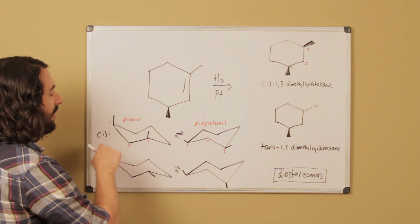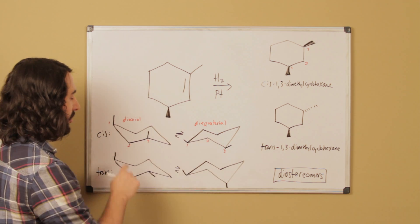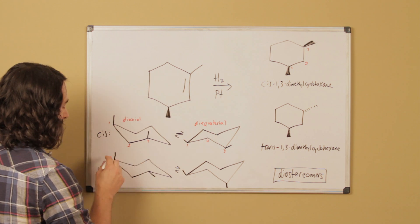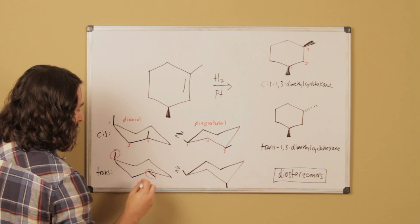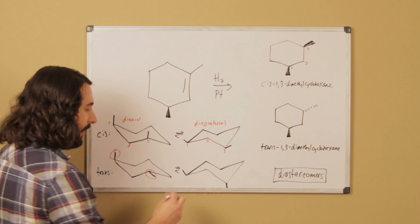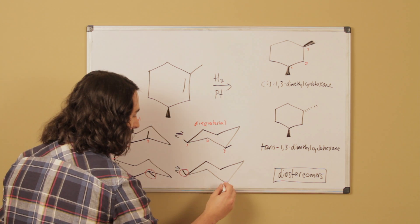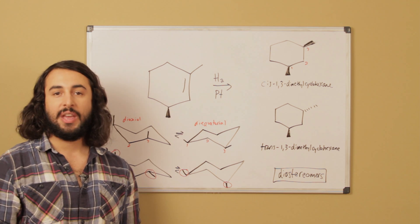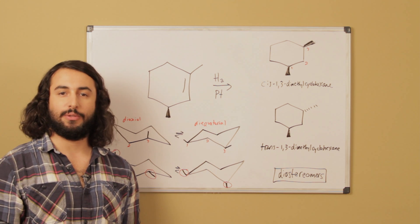We have our diaxial conformation, we have our diequatorial conformation for the cis molecule. For the trans molecule, we've got one axial one equatorial. That means when we flip it, we're going to get that one equatorial and that one axial.